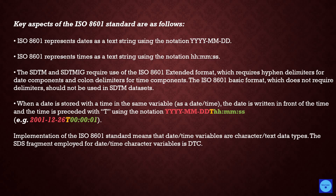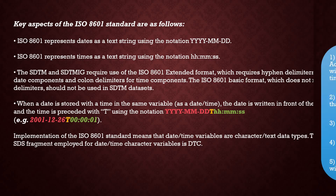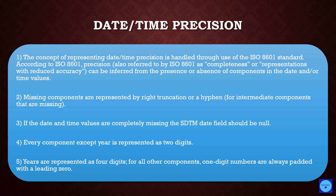When a date is stored with a time in the same variable as a datetime, the date is written first, followed by T, then the time value. So the order is: date, then T, then time. Implementation of the ISO 8601 standard means that date-time variables are character or text data types. The SDTM suffix used for date and time character variables is DTC.